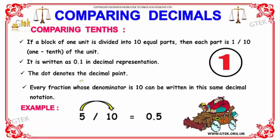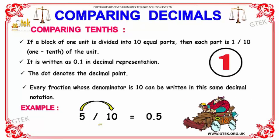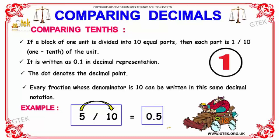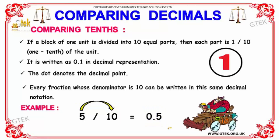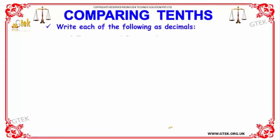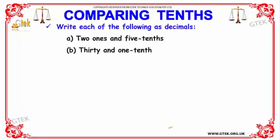Every fraction with a denominator of 10 can be written in decimal notation. For example, 5 divided by 10 can be represented as 0.5. This is how we compare tens in terms of fractions.